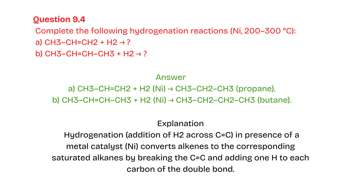In the presence of Ni catalyst: CH3–CH=CH–CH3 + H2 → CH3–CH2–CH2–CH3, butane.